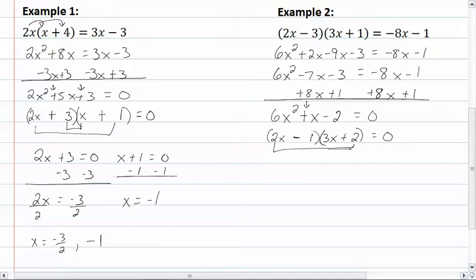So we have 4x minus 3 gives me 1. So now we set each one of those factors equal to zero. So we have 2x minus 1 equal to zero, and 3x plus 2 equal to zero.